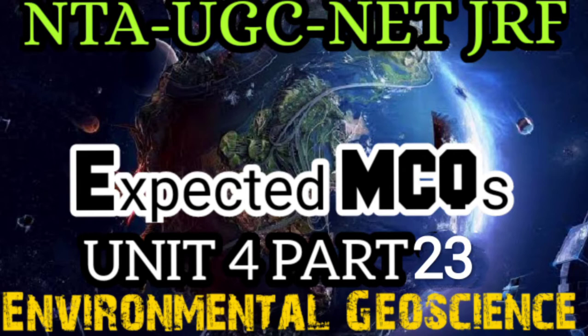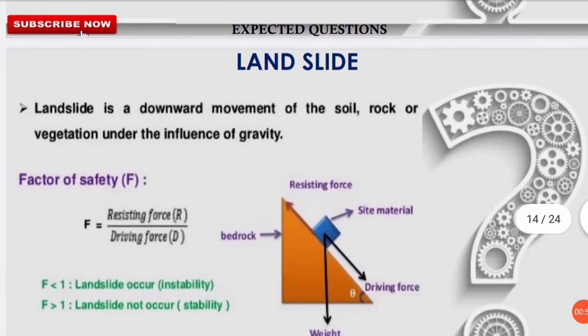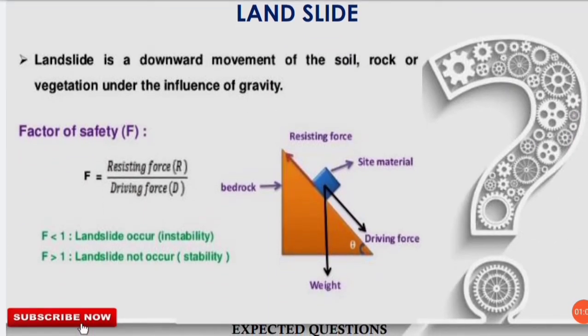The first question is: which of the following statements is not related to the factor of safety? Before knowing the correct answer, you must know what the factor of safety is. This factor of safety is related to landslides. We all know that a landslide is a downward movement of soil, rock, or vegetation under the influence of gravity.